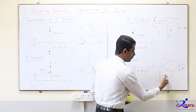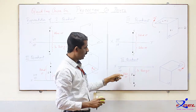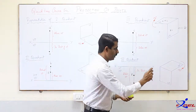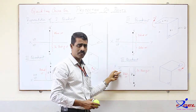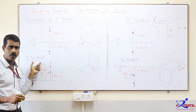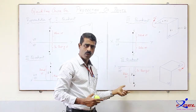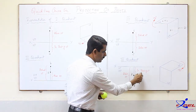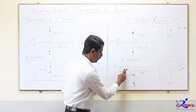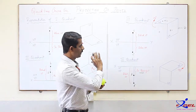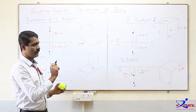In the fourth quadrant, the object is in front of VP and below HP. When HP is rotated 90 degrees clockwise, VP and HP get merged, but the XY line will be above — VP and HP will be below. The fourth quadrant is always opposite to the second quadrant. Both front and top views will be below the XY line. The in-front-of-VP distance matters for the top view, and the below-HP distance matters for the front view.